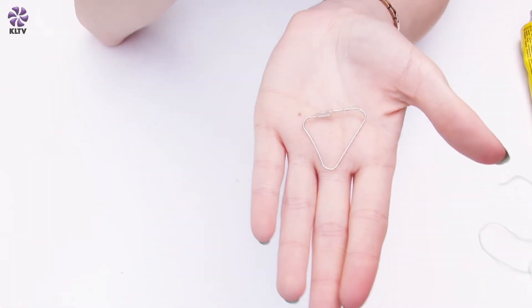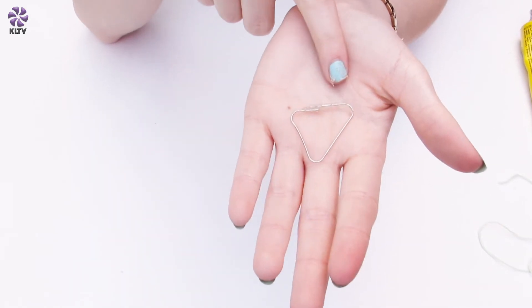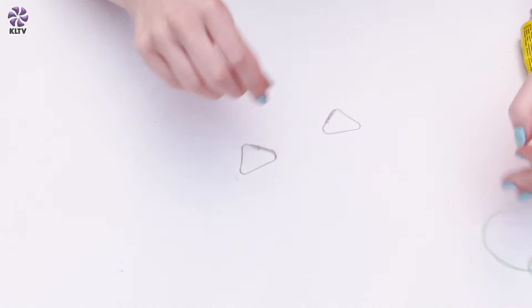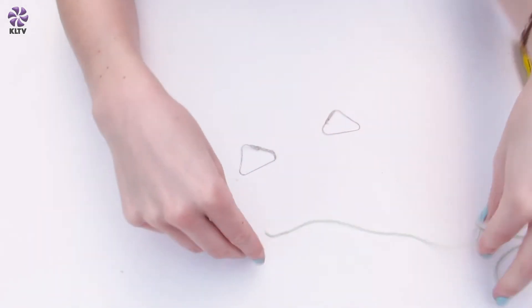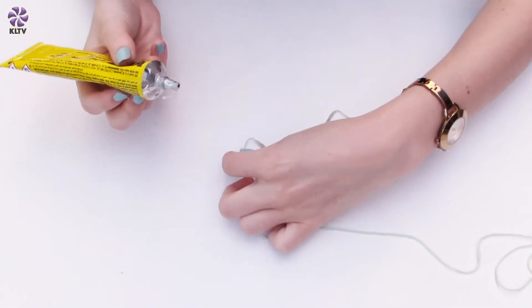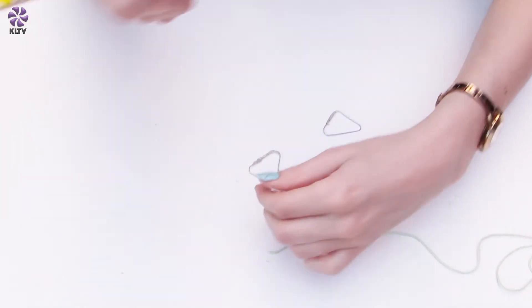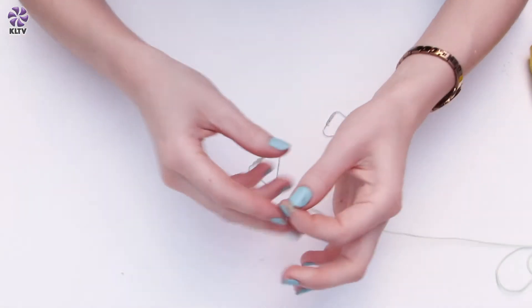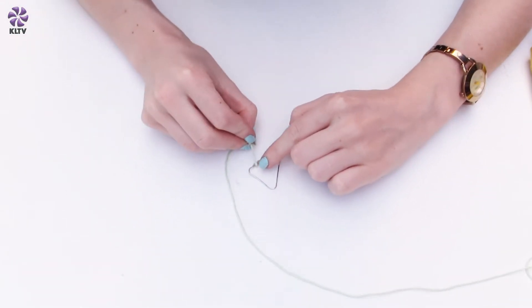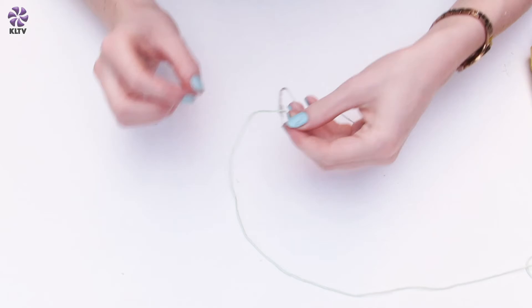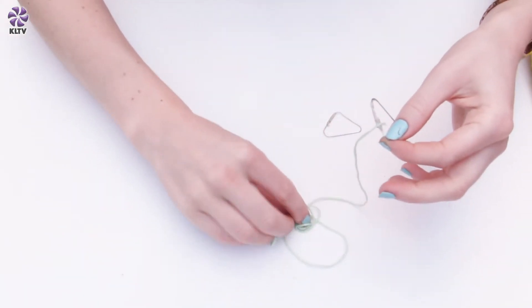So once we have glued our triangles into place and the glue has dried and hardened, we want to go in with our embroidery thread. So we just want to take a small amount of UHU glue and just apply that to the edge, and then we just want to stick that onto the edge like so. And then we just want to thread this through.